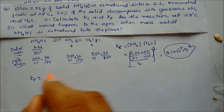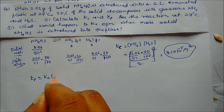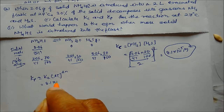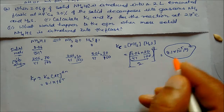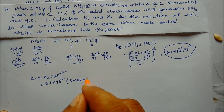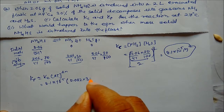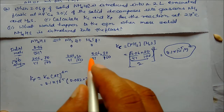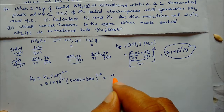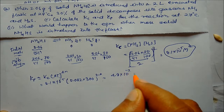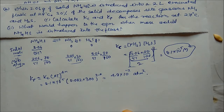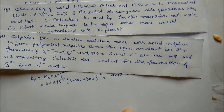Now converting to Kp using the relation Kp = Kc × (RT)^Δn. Here Δn = 2 (two moles of gas produced), R = 0.0821, and T = 27°C = 300 K. So Kp = 8.1 × 10⁻⁵ × (0.0821 × 300)² = 4.9 × 10⁻² atm². This is our answer.